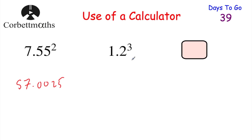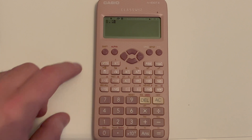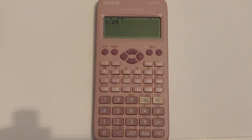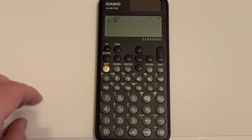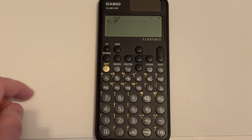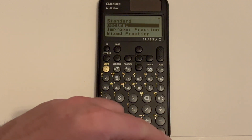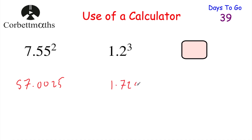Next, can you work out 1.2 cubed? Type it into your calculator and see what you get. On the first calculator, press 1.2, then the cubed button — that little X with a three above it — then press equals. Press SD if you want a decimal: the answer is 1.728. On the other calculator, press 1.2, then the power button, type in three, and press EXE. Press format, then down, then EXE to get the decimal 1.728.